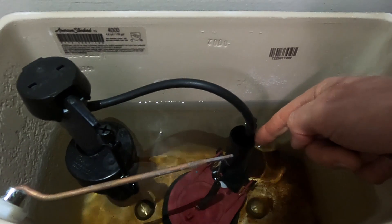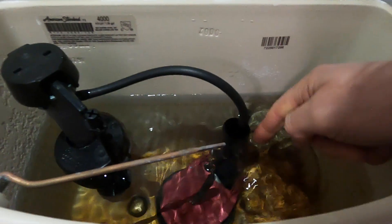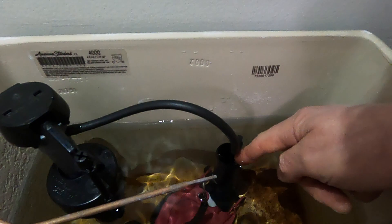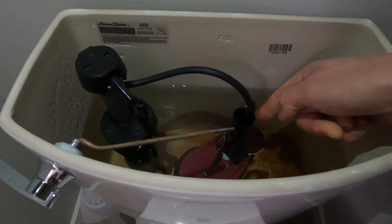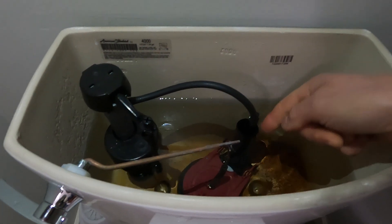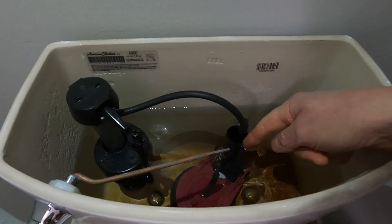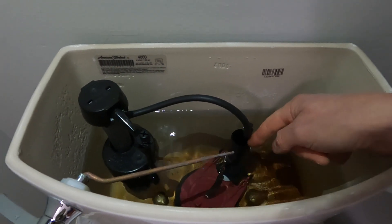This is the flush valve. This is the fill valve. When that water is too high in the tank, it overflows down the flush valve. You want this water to be a half an inch to an inch below the top of this. It's not supposed to be flowing into that.